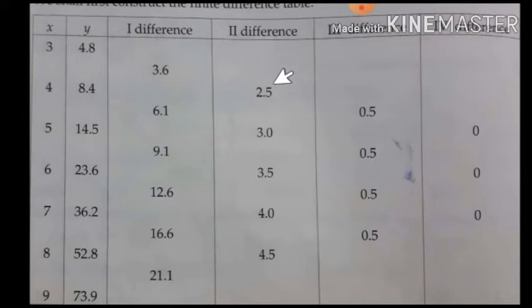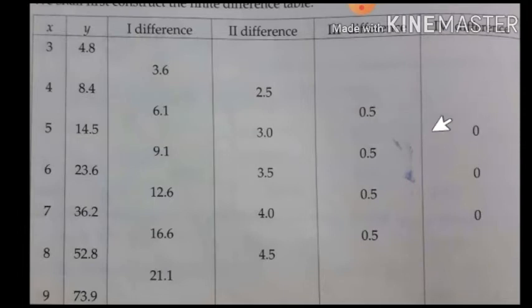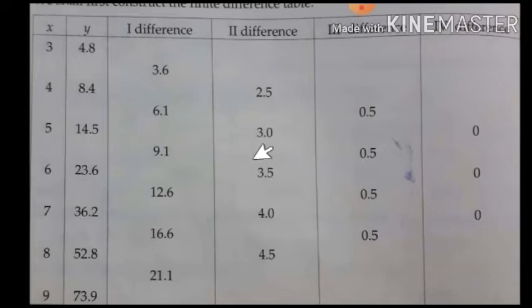The third difference column is obtained by taking differences between the second difference values, and the fourth difference column is obtained by taking differences between the third difference values. The procedure is the same as how we obtained the first and second difference columns.